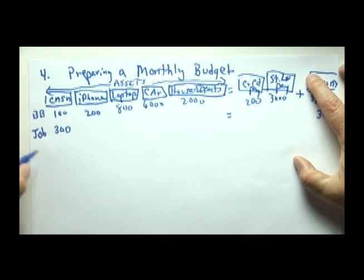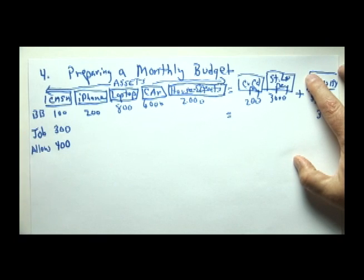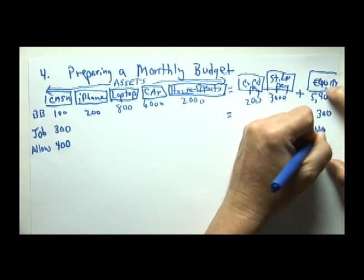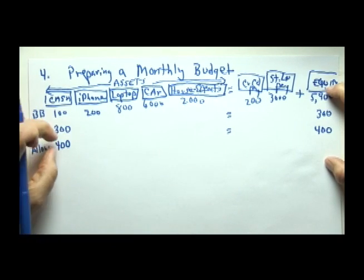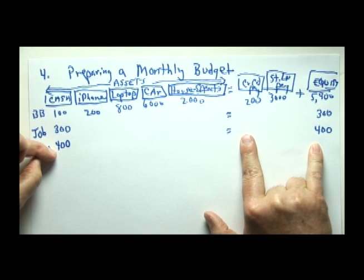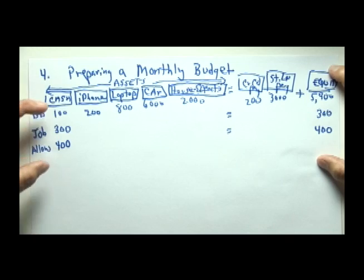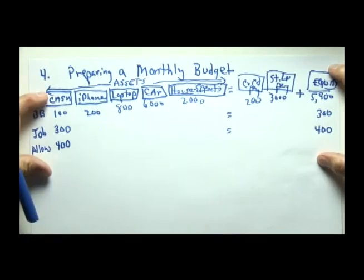Next, this student is going to get an allowance from parents. And let's say the parents send the student $400 during the month for living expenses. If the student doesn't have to pay this money back, then net worth goes up $400 as well. We still equal. Every time something happens to the left of the equation, something must happen to the right of the equation in an equal manner, always adhering to the fundamental accounting identity: assets always equal liabilities plus equity.